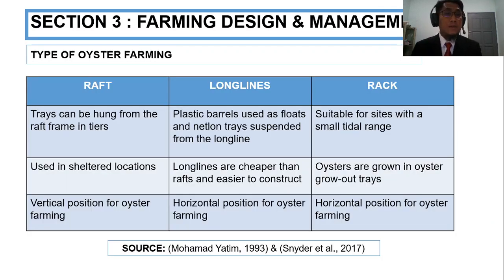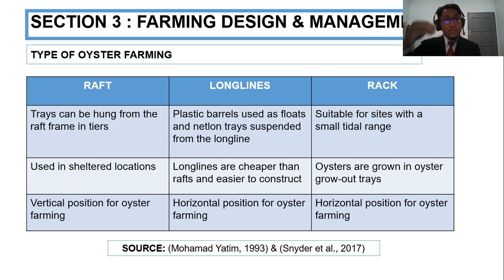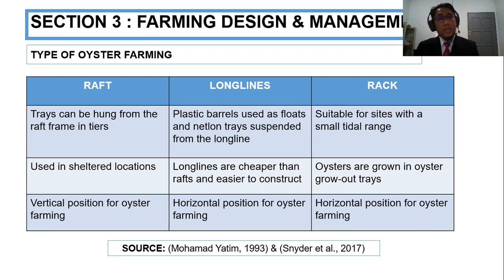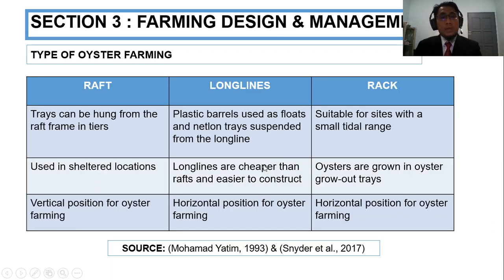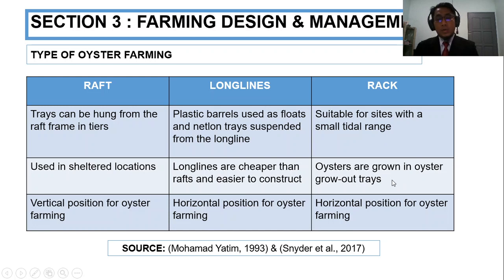The differences between the three types: rack culture uses cans hung from a rack frame in vertical tiers and is used in sheltered locations. Long-line culture uses plastic barrels as floats with nylon trays suspended from the long line — it is cheaper than rack and easier to construct, and this is a horizontal position system. The tray system is suitable for small tidal ranges where oysters grow in trays, also in a horizontal position.